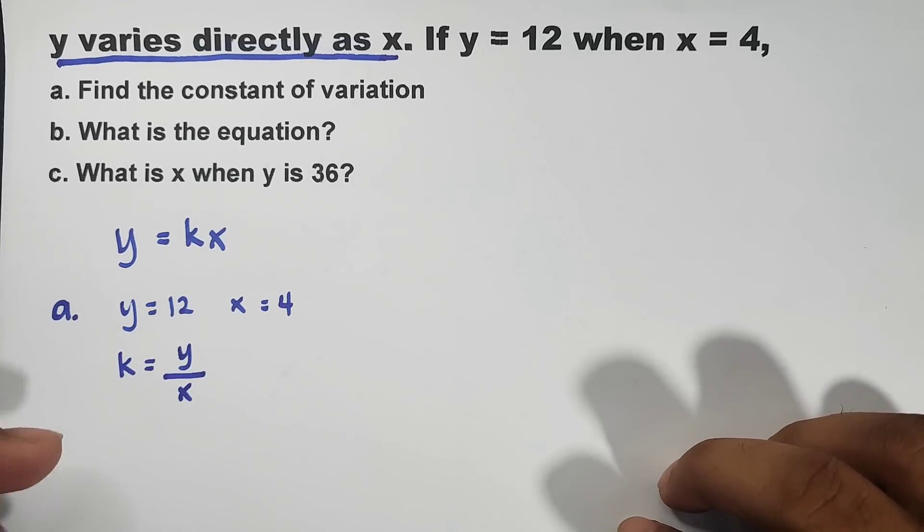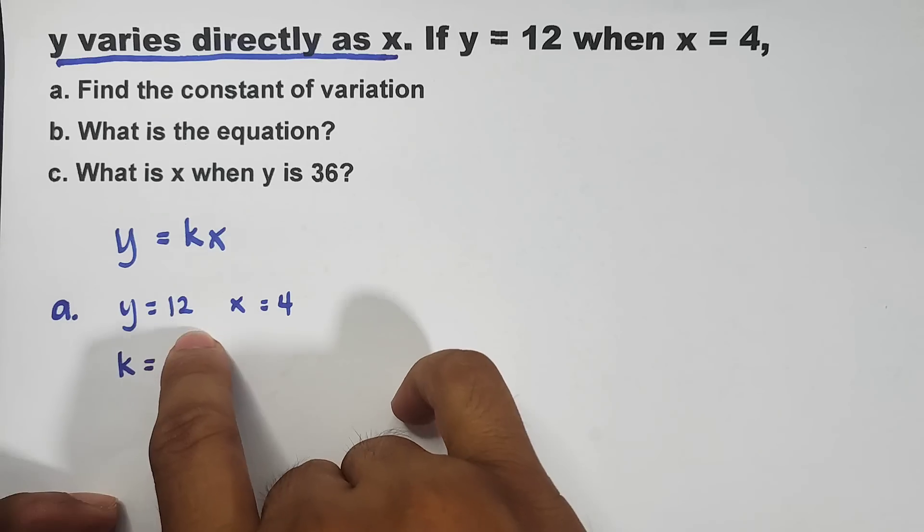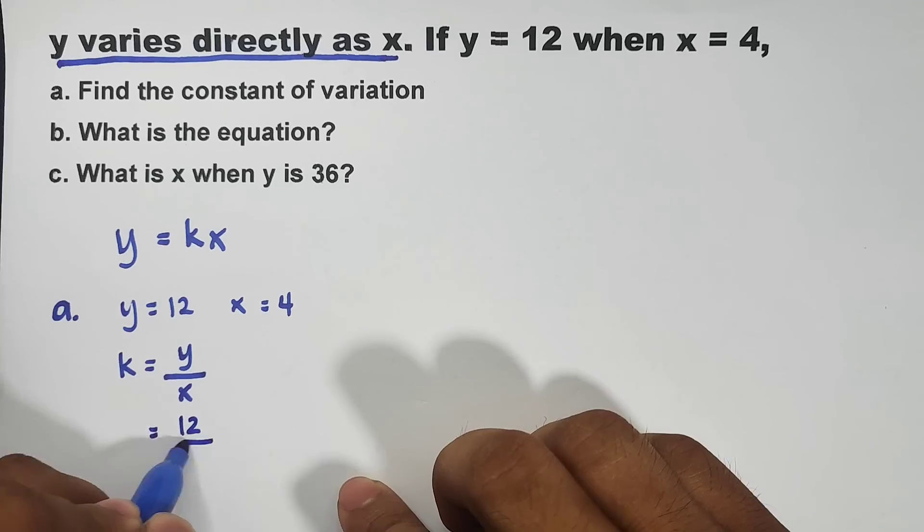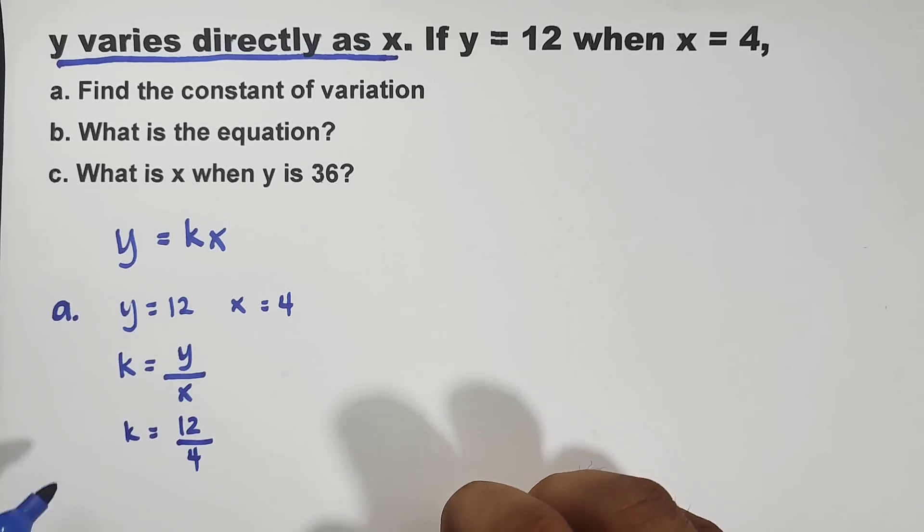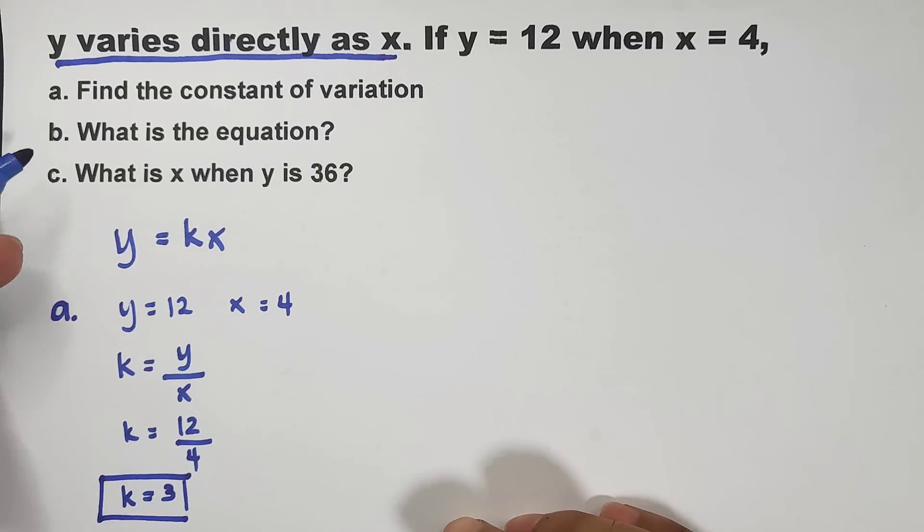So, we have k equals y over x. Again, this variable k is the constant of variation. To find the constant, substitute the value of y, which is 12. That is 12 over your x, which is 4. To simplify this, your k equals 12 divided by 4, which is equal to 3. Meaning, this is the constant of variation. So, we are done answering letter A.